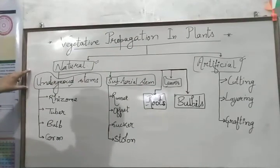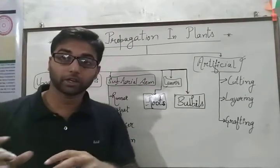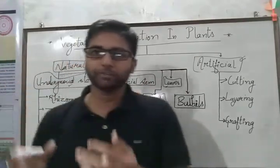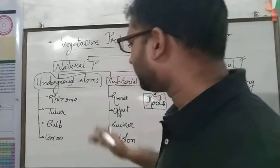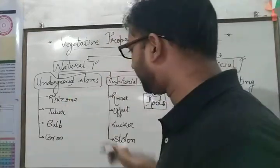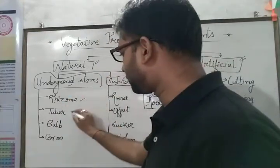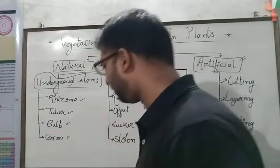Underground stems are of different types — they have different modifications and that's why they are termed with different names: rhizome, tuber, bulb, and corm.